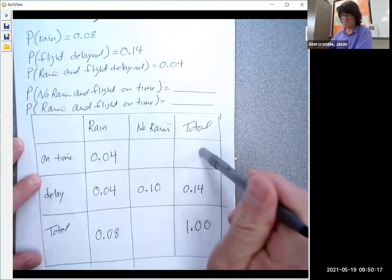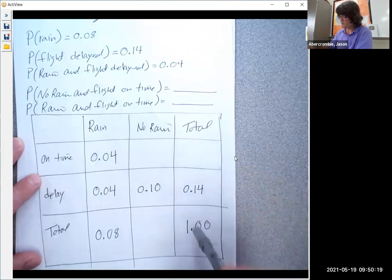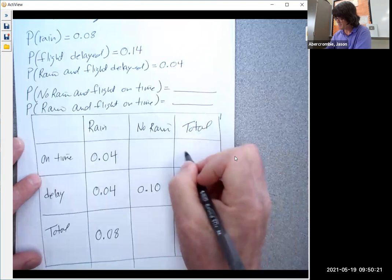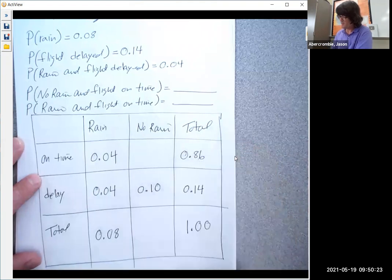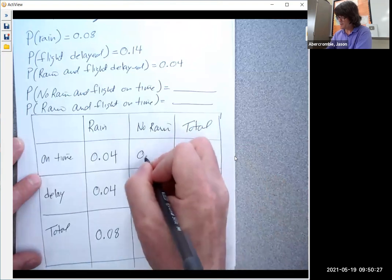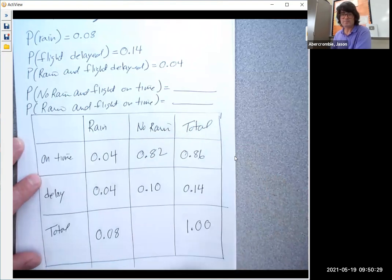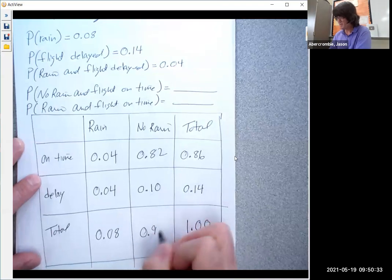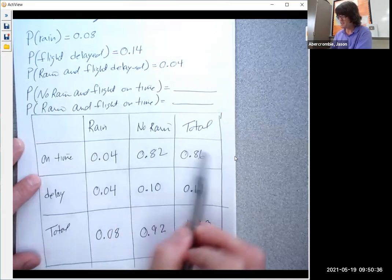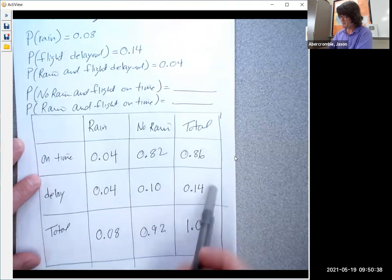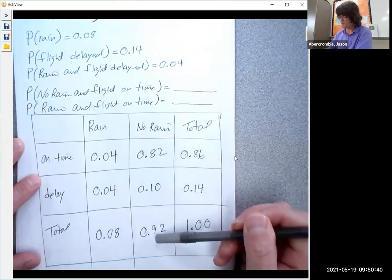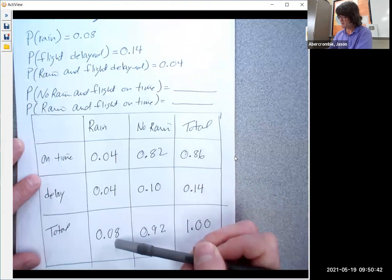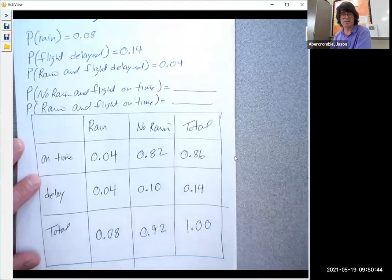We can figure out this box. Something plus 0.14 makes 1. So that's going to be 0.86. And then this plus something makes 0.86, so that's going to be 0.82. And then if you add these two together, you should get a total of 0.92. You can check yourself just by making sure these add up to 86. These add up to 14. This adds up to 0.92. These add up to 0.08. These add up to 1. So it looks good.